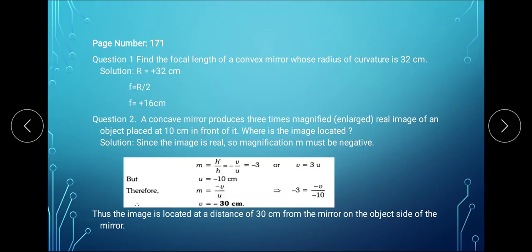Question number 1 says find the focal length of a convex mirror whose radius of curvature is 32 cm. Since it is a convex mirror, its radius as well as focal length will be positive. Radius is plus 32 cm. And we know that focal length is half of radius of curvature, therefore focal length will be plus 16 cm.